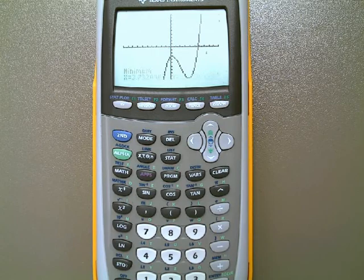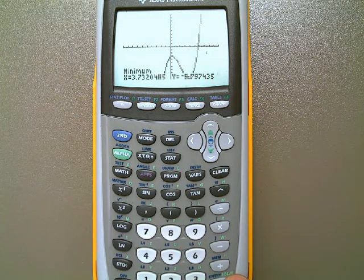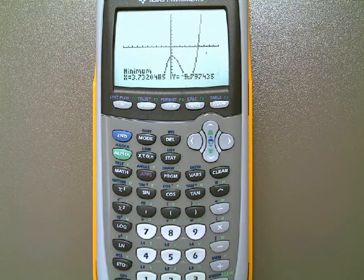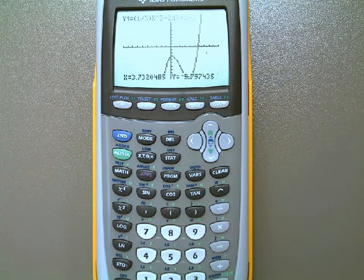I'm going to hit enter again on the guess question, and it tells me the next one is at 3.73 and a negative 9 point something there. I can move the cursor out of the way if I want to. 9.79, it looks like.